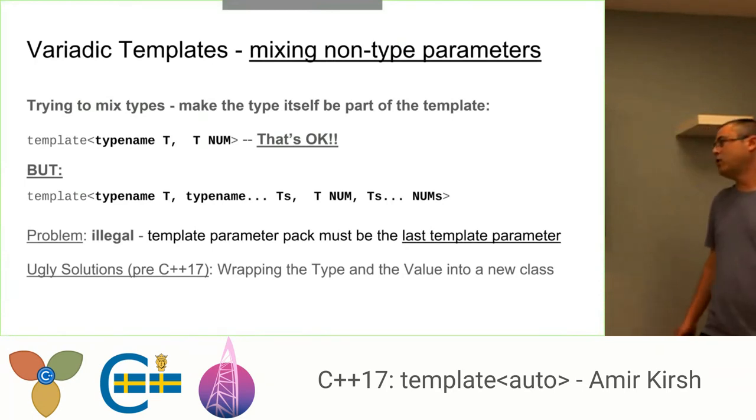Now there is a solution before C++17, and the solution is to wrap up the type and the value. It's ugly. We are looking for something else. And we remember that we want to stick auto somewhere. So let's think what can we do. And C++17 brought the following solution.